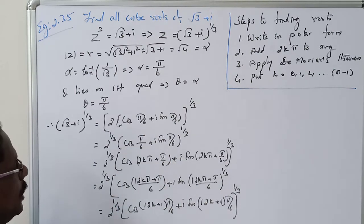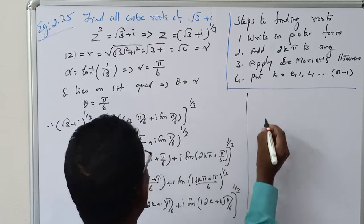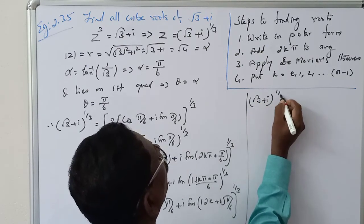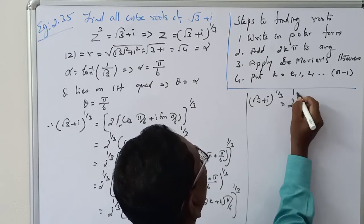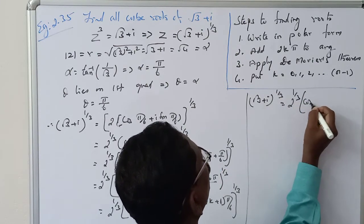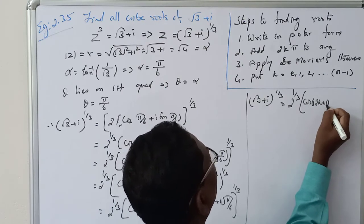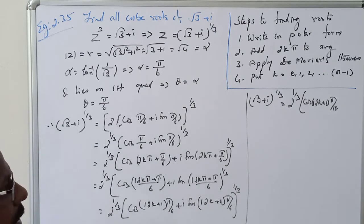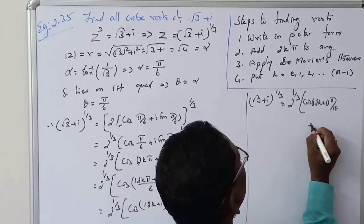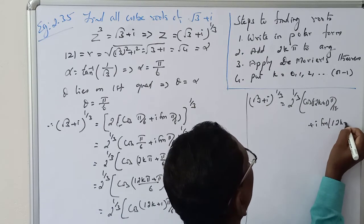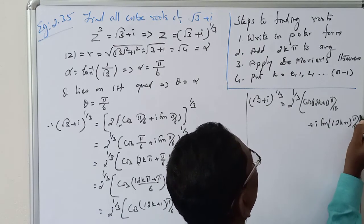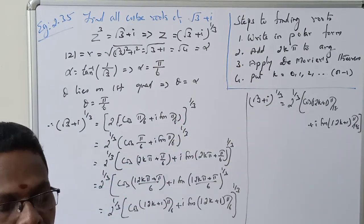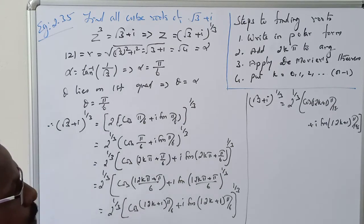Third step: apply De Moivre's theorem. Applying De Moivre's theorem, (√3 + i)^(1/3) equals 2^(1/3) · [cos((12k+1)·5/18) + i·sin((12k+1)·5/18)]. Now put in the values of k. Since n equals 3, k equals 0, 1, 2.